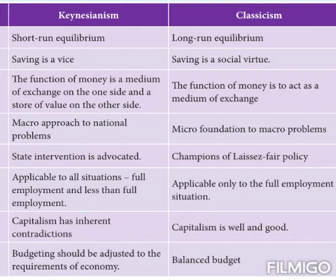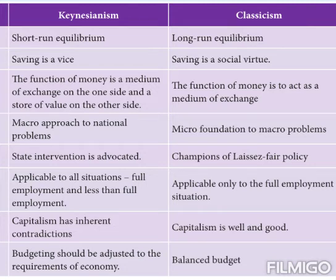Under Keynesianism, less than full employment is possible — you cannot always assume full employment; unemployment can exist. But in the classical view, only full employment is assumed as the equilibrium level. So if you look at the Keynesians, there can be less than full employment and unemployment.